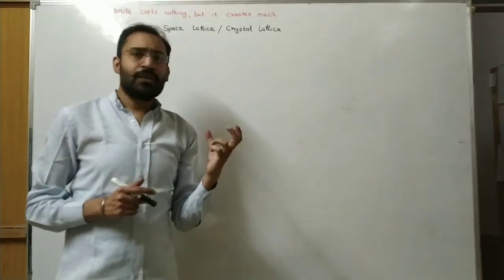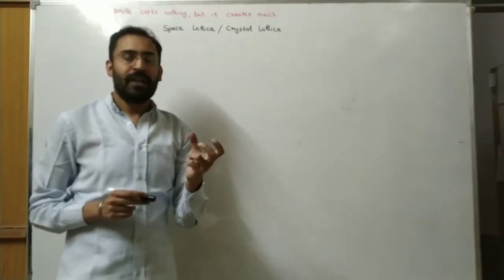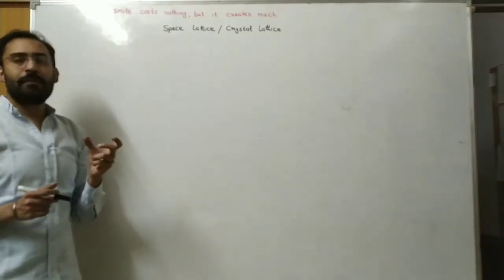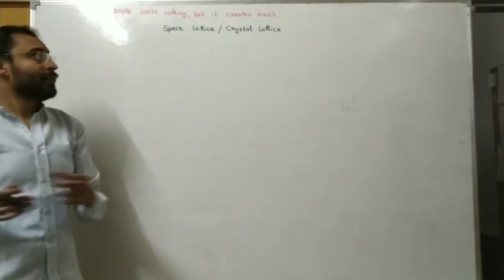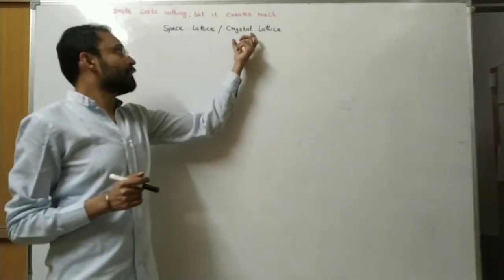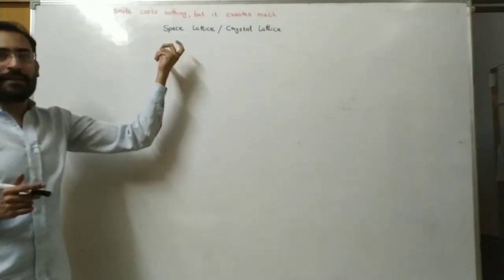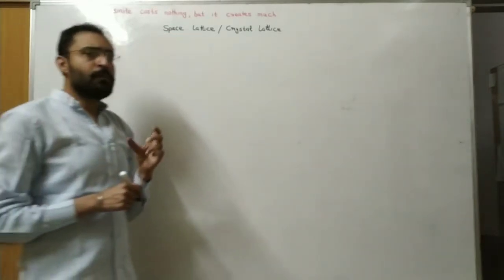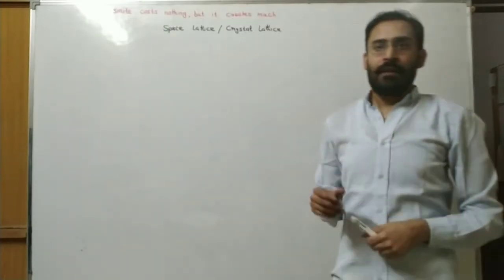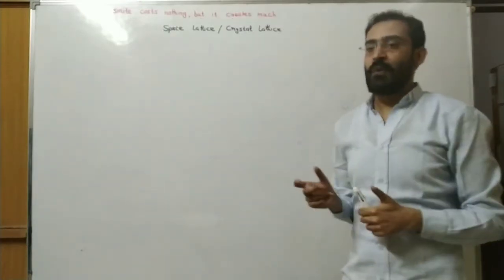The three dimensional space in which constituent particles are arranged is known as crystal lattice or space lattice. The various points in three dimensional space are known as lattice points.